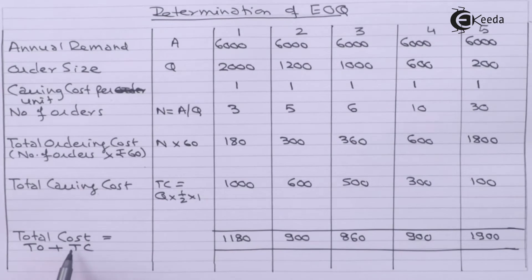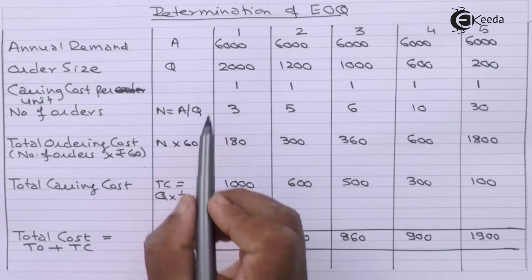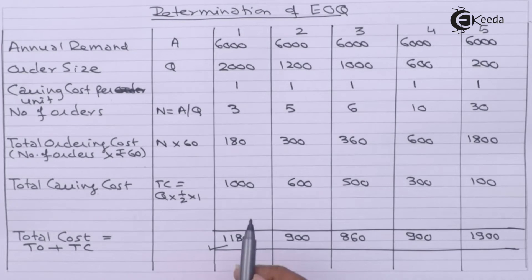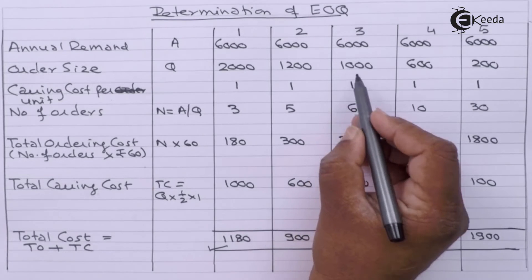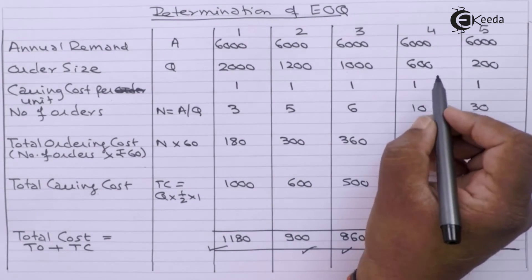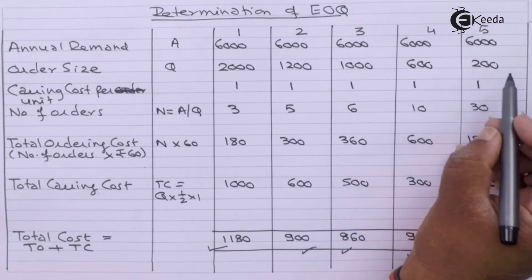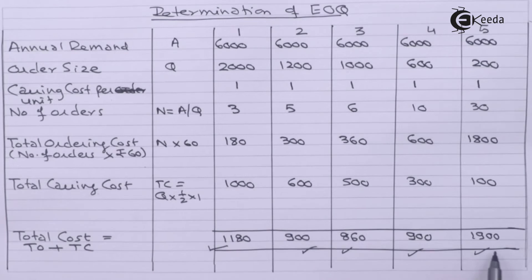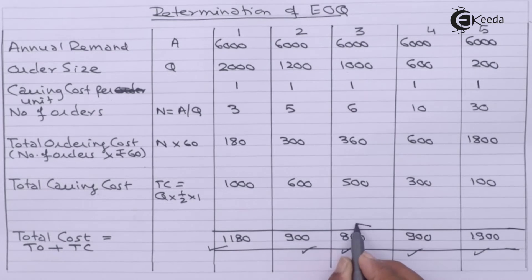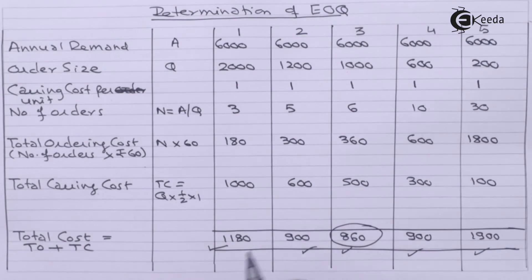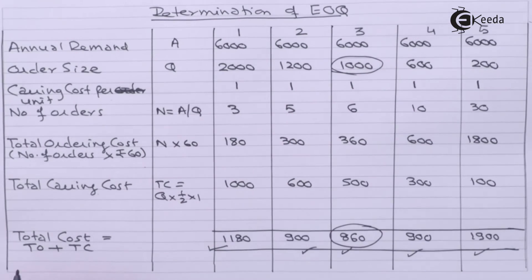We have obtained the total cost figures, which include both ordering cost and carrying cost. Comparing all these figures: if our order size is 2,000 units, the total cost is Rs. 1,180. At order size of 1,200 units, it is Rs. 900. At order size of 1,000, it is Rs. 860. At order size of 600, it is Rs. 900. At order size of 200, it is Rs. 1,900. We compare all these figures and select the lowest one.